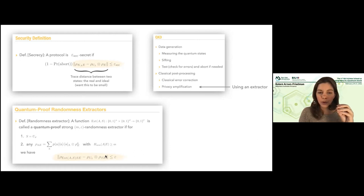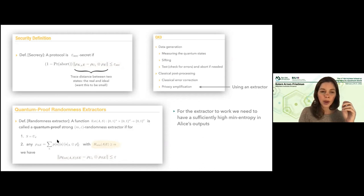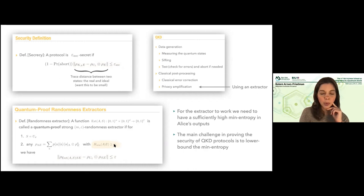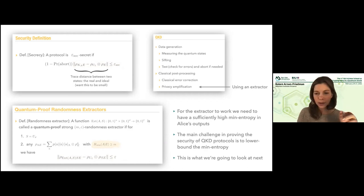Now we see how this works. If I take the output of the extractor as my final key — Alice's key — then the extractor gives me exactly the promise I need to prove secrecy. It tells me the output will be decoupled, will be in tensor product — I will get this uniform key in tensor product from the adversary's quantum side information. What I need to make sure is that the extractor works in my protocol, which means I can prove the state before applying the extractor has enough min-entropy.